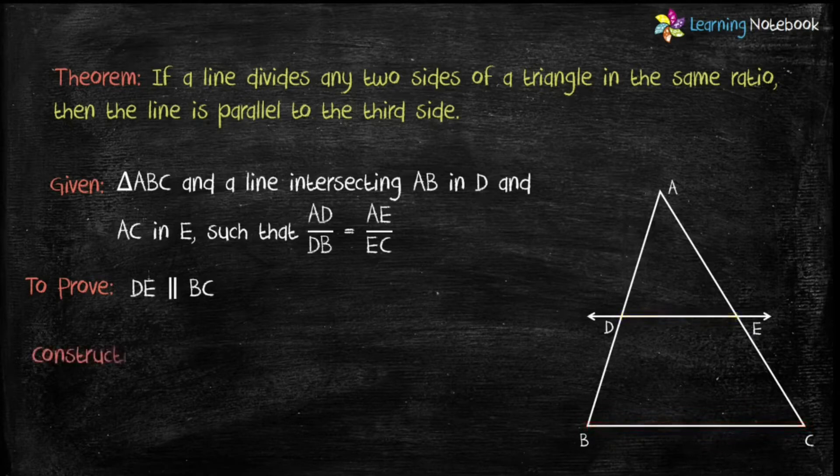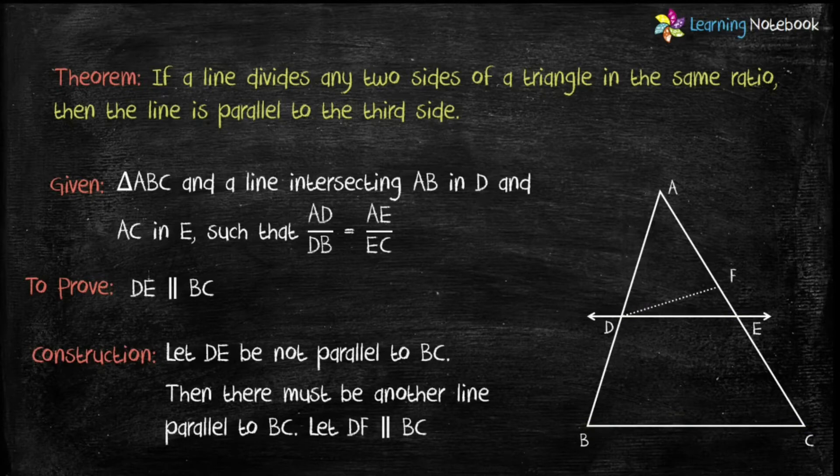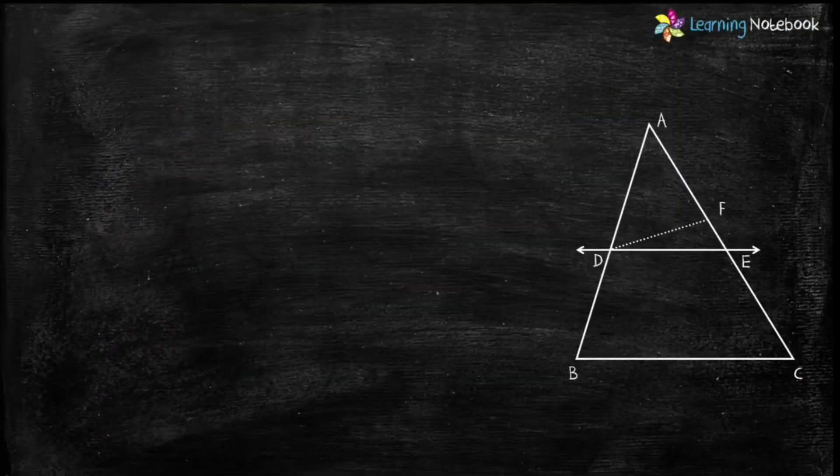To prove this theorem, let's assume DE is not parallel to BC. Then there must be another line parallel to BC. So, let DF parallel to BC.